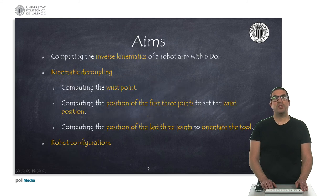The aims of the presentation are to explain how to compute the inverse kinematics of a robotic arm with 6 degrees of freedom. To do this we will solve the problem based on the kinematic decoupling as a consequence of using a spherical wrist.